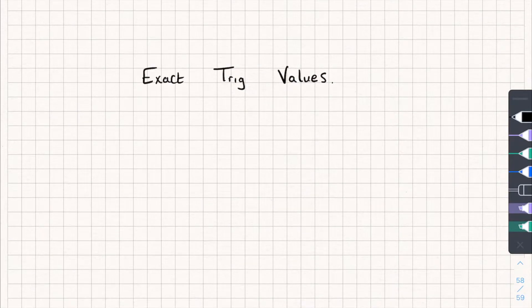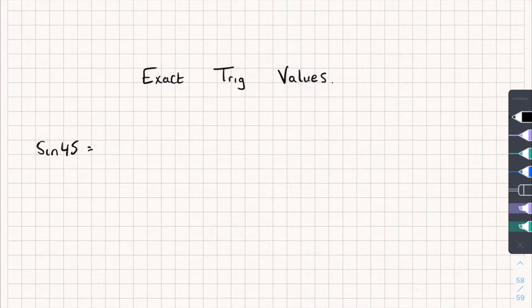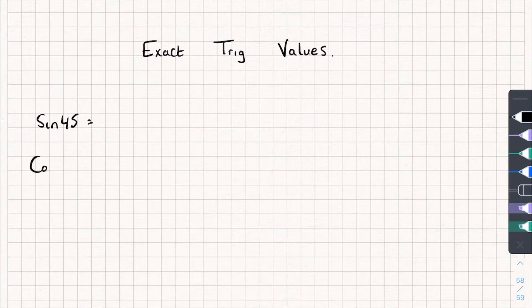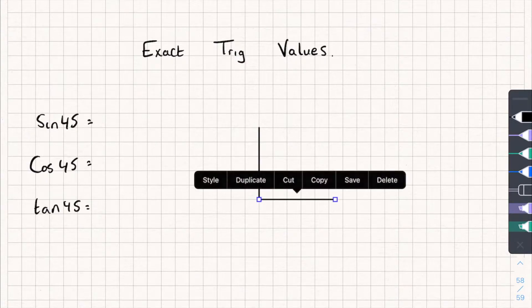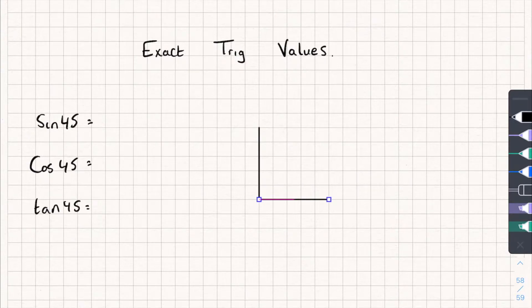In an exam you could be asked to write down the value of say sine 45 without a calculator. It might be cos 45, it might also be tan 45, and they'll expect you to know this without a calculator. Here's the triangle I'm going to use — it's going to be a triangle with two sides of length one.